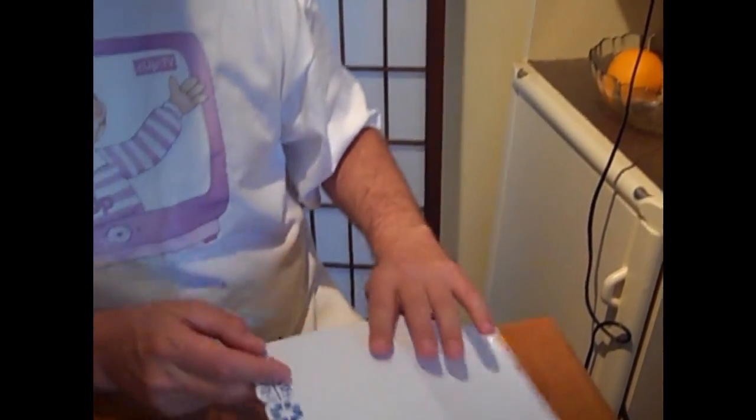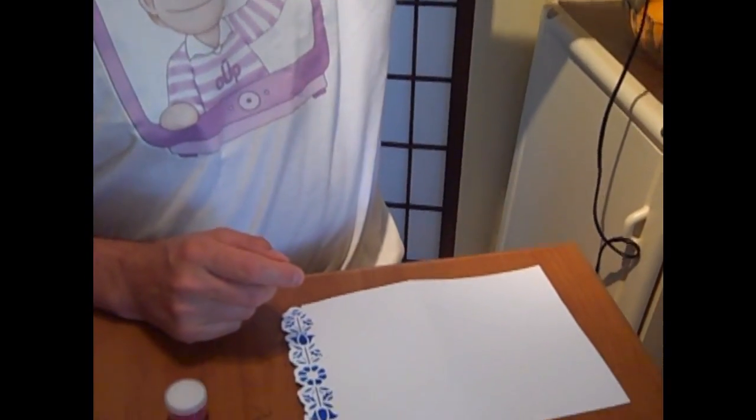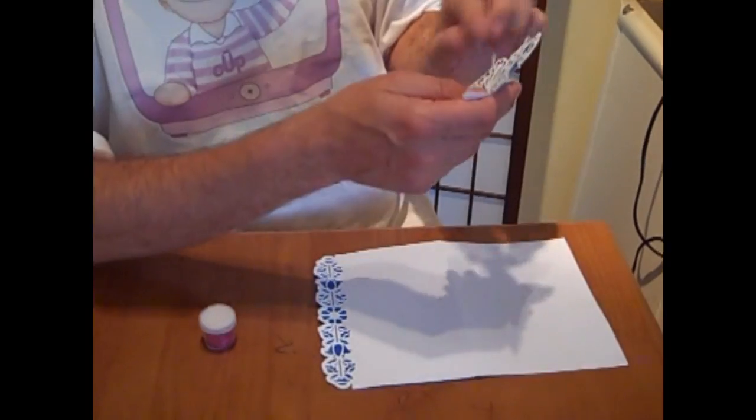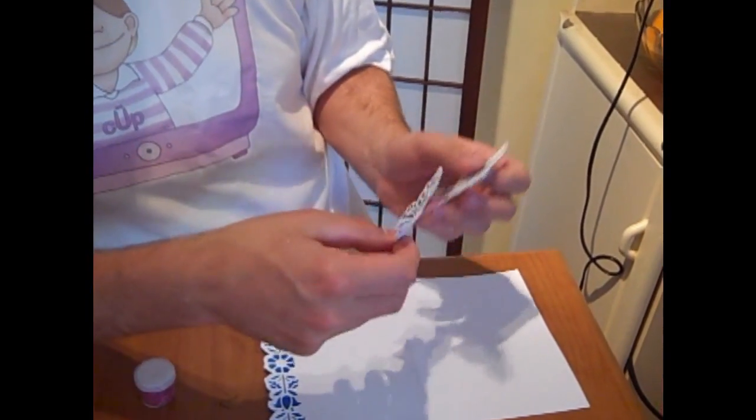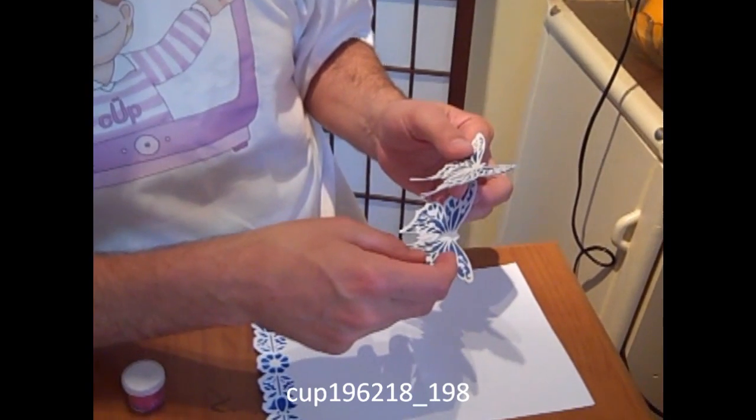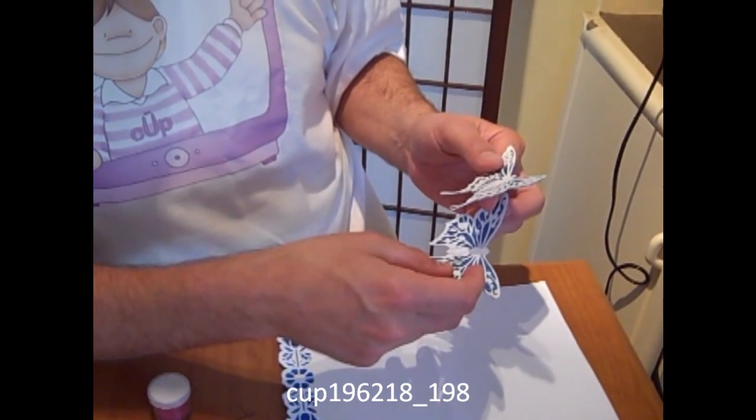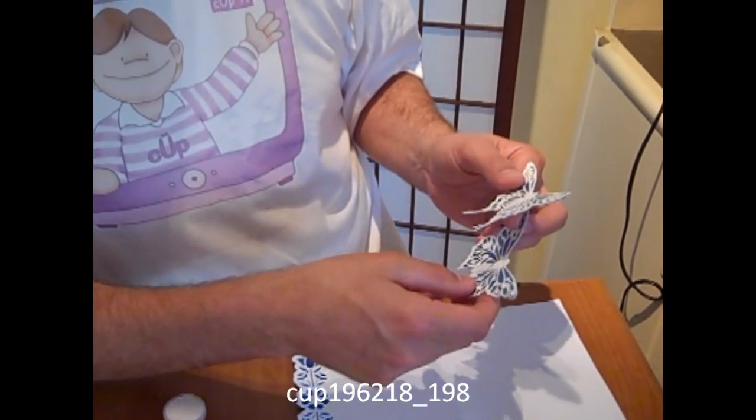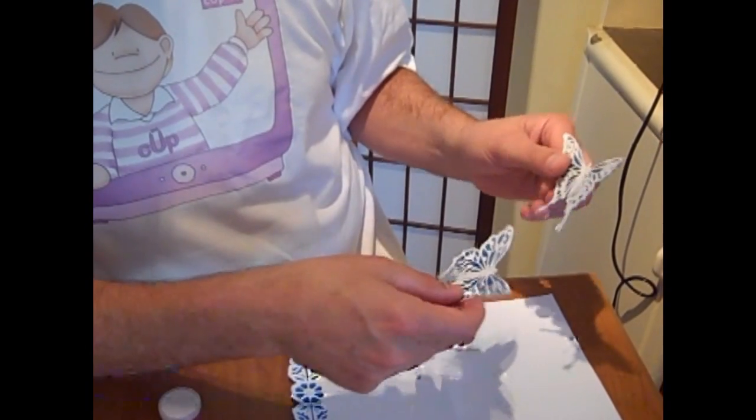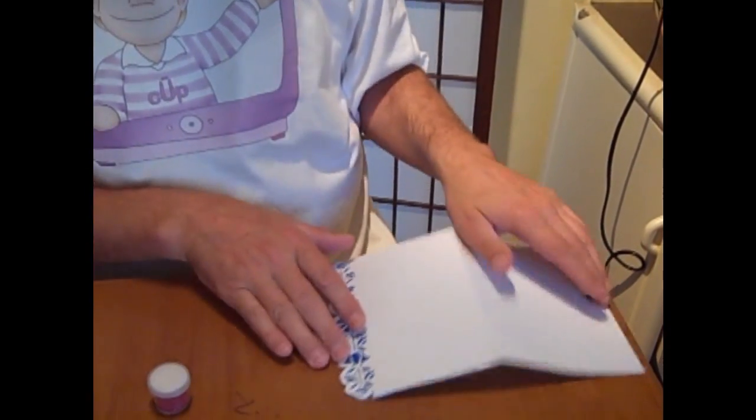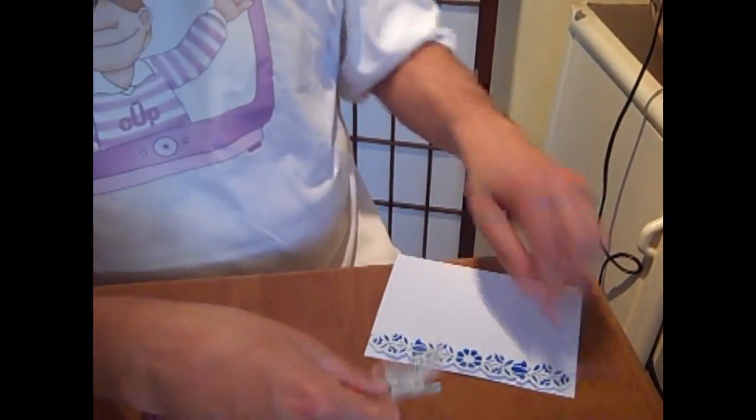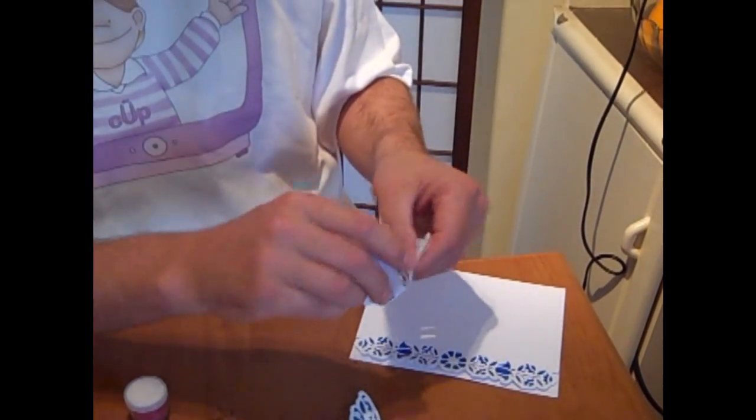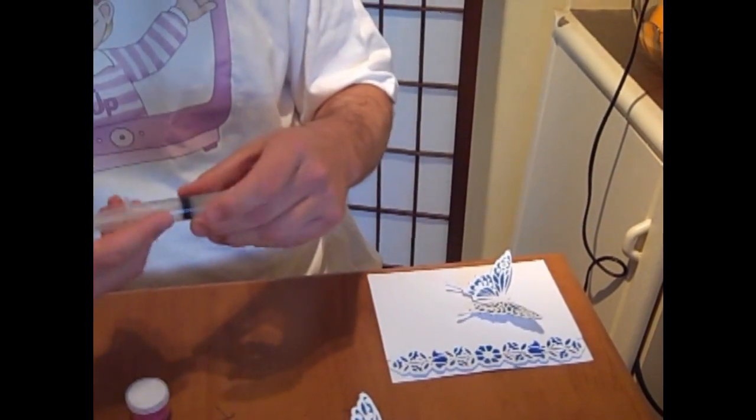What I've done now - I've done exactly the same using exactly the same method with two of my butterflies which can be found on CUP196218 underscore 198. That is entitled Four Butterflies and Hummingbird, but I've used two of the butterflies. As you can see, embossed in exactly the same way, and I'm going to place those on the front of my card.